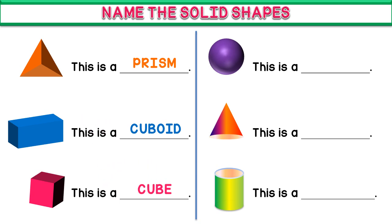Cube — this is a cube. And the fourth one is a sphere — this is a sphere. You can write in the blank: sphere.